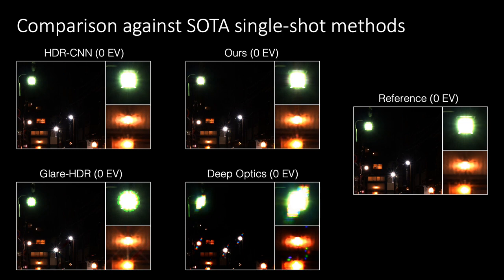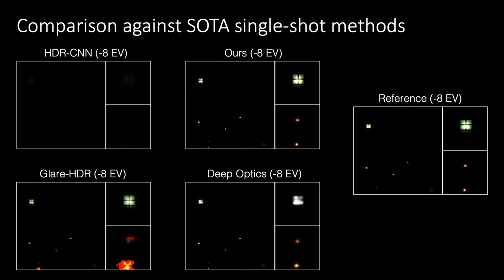Our technique outperforms state-of-the-art single-shot methods. In this scene, deep optics leaves several artifacts around the light fixtures. Furthermore, HDR-CNN fails to estimate high-intensity scene content, and both glare HDR and deep optics have reconstruction failures. Our method correctly recovers saturated scene content while avoiding leftover artifacts.